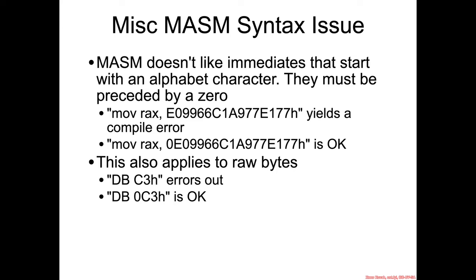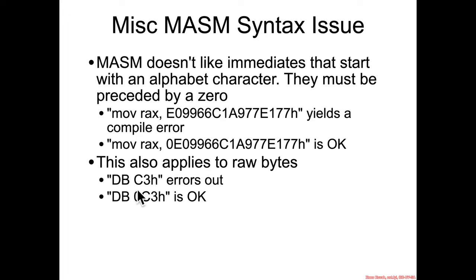One quick thing to help you avoid some headaches: MASM doesn't like immediates that start with an alphabetical character, even if you're telling it that it's hex. So you can't do something like move RAX, E... Instead, you need to prefix that with a 0. Once you do that, it's all good. The same thing applies if you're outputting raw bytes — you can't just do DB C3H. You have to do DB 0C3H, and then it compiles fine.